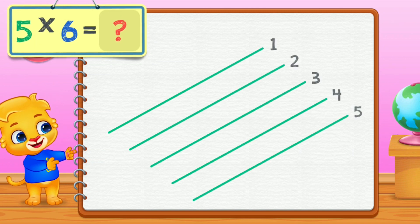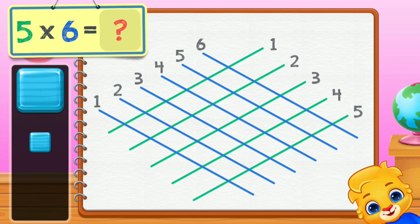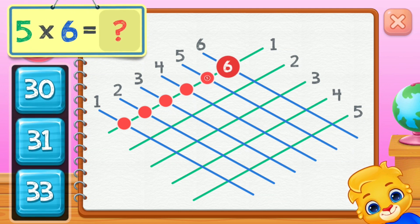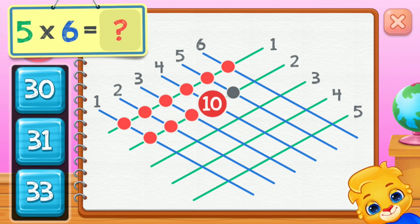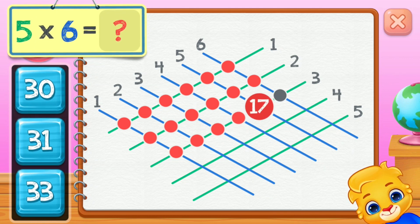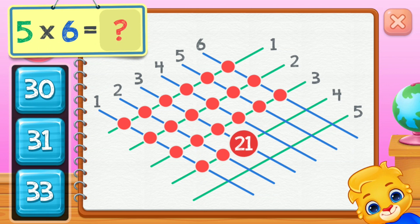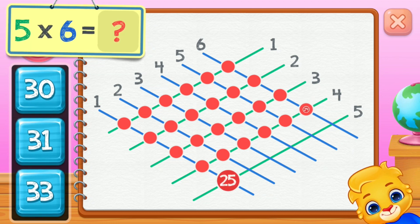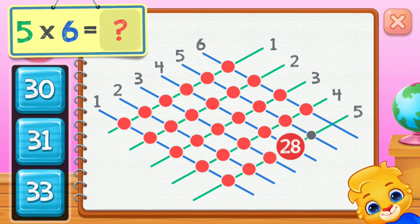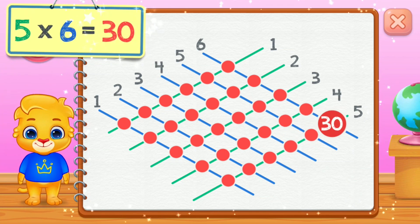Five times six equals... One, two, three, four, five, six, seven, eight, nine, ten, eleven, twelve, thirteen, fourteen, fifteen, sixteen, seventeen, eighteen, nineteen, twenty, twenty-one, twenty-two, twenty-three, twenty-four, twenty-five, twenty-six, twenty-seven, twenty-eight, twenty-nine, thirty. Five times six equals thirty.